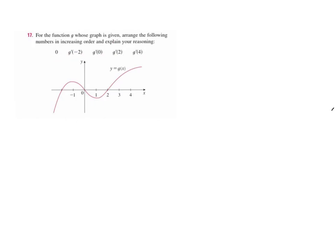They give us 0, we know what 0 is, then g'(-2). That means what is the slope of the tangent line at -2? So the tangent line, let's draw it in, we can tell it's positive. We're going to just see positive numbers, negative numbers versus 0, and then assess further.